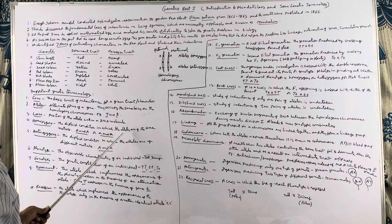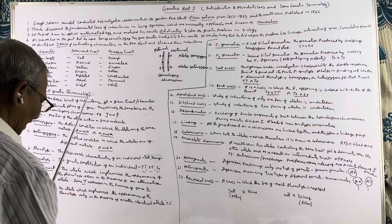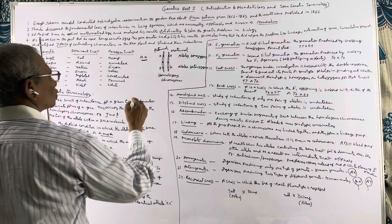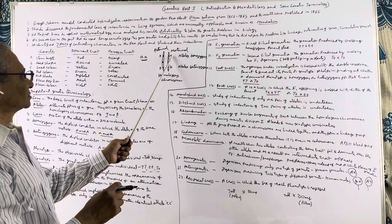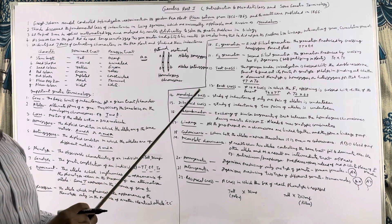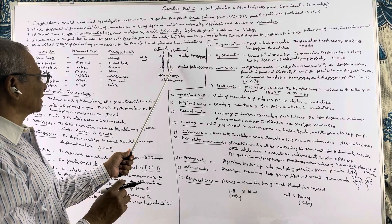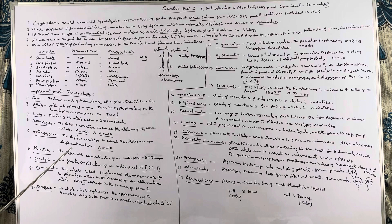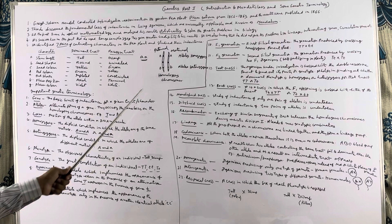Homozygous means the diploid condition in which the alleles are of the same nature — either both dominant (capital A, capital A) or both recessive (small a, small a). Heterozygous means the diploid condition in which the alleles are of different nature — capital A, small a, or capital B, small b. When both alleles are dominant or both are recessive, that is homozygous; when one is dominant and one is recessive, that is heterozygous.